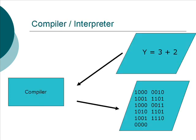So we have this single statement, in this case an assignment statement, Y equals 3 plus 2, and that gets translated via a thing called a compiler into a sequence of ones and zeros.